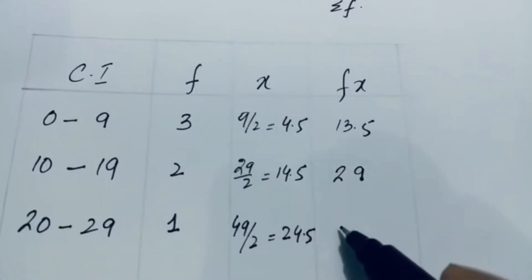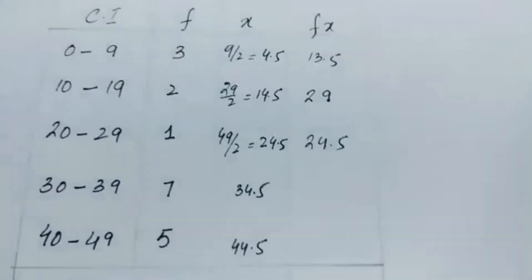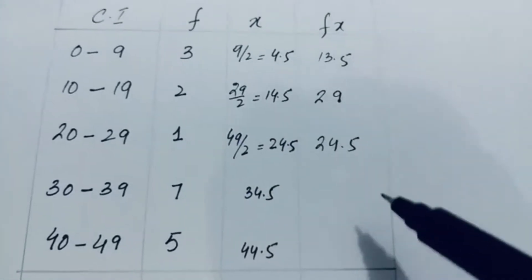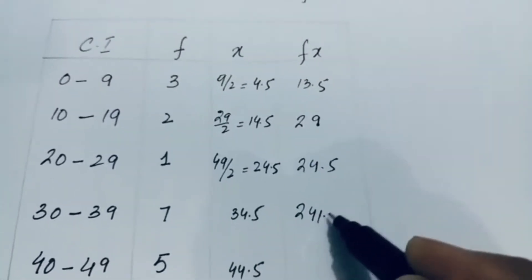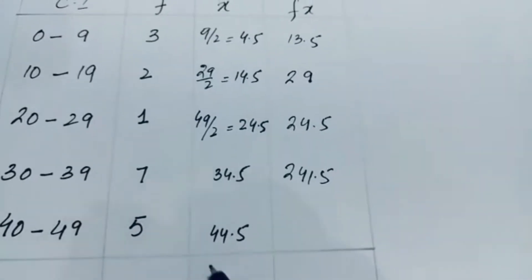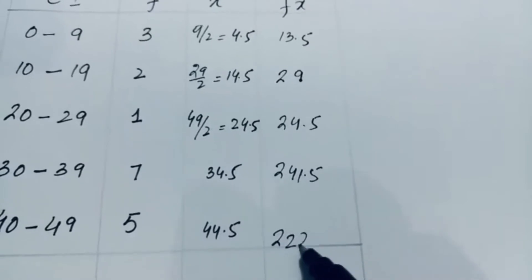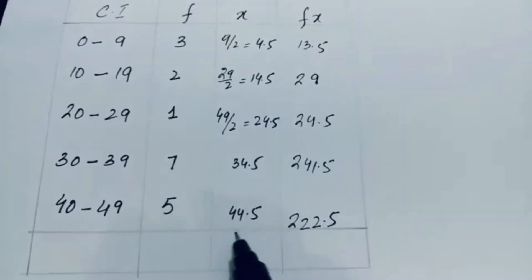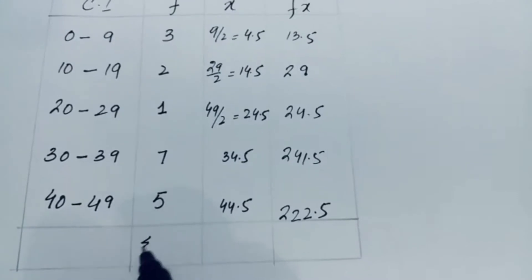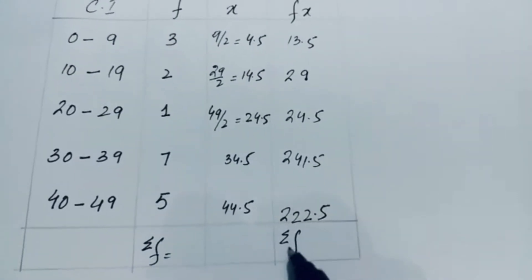1 multiplied by 24.5 equals 24.5. The total fx is 241.5, and 5 multiplied by 44.5 equals 222.5. In the formula, we need the total frequency and total fx.